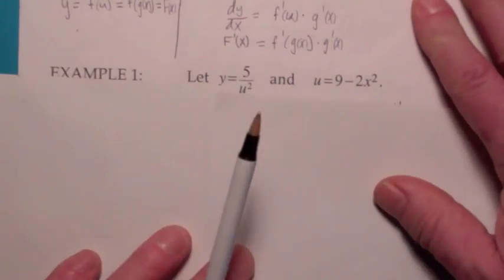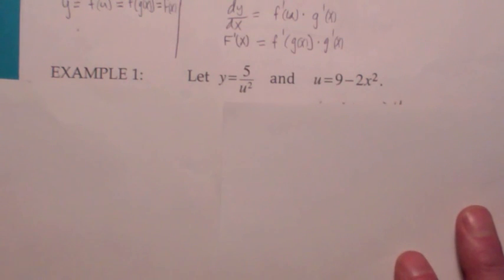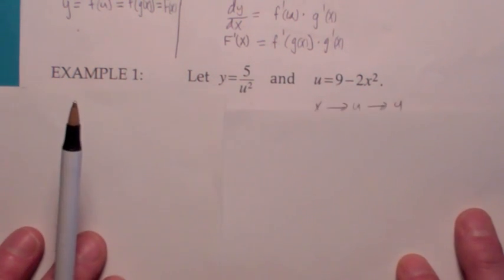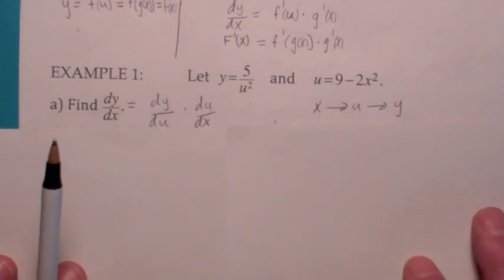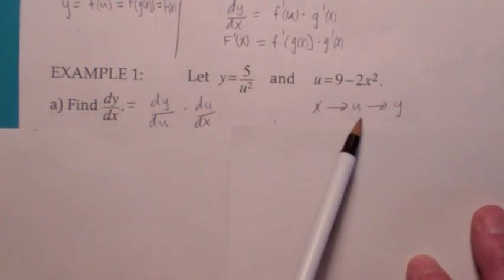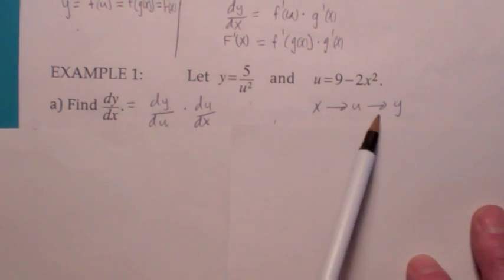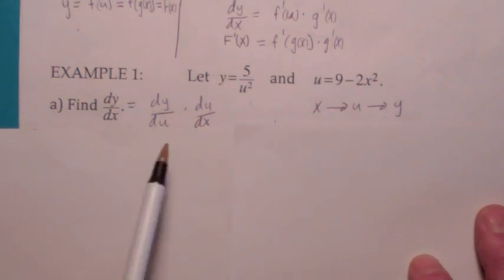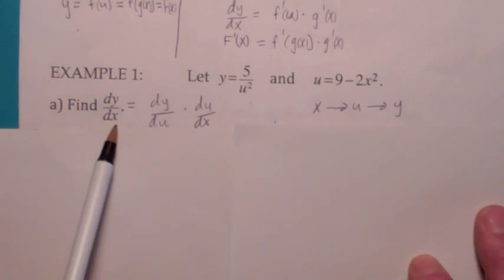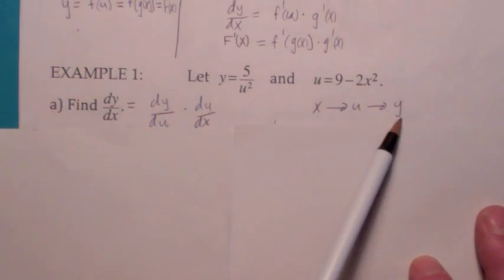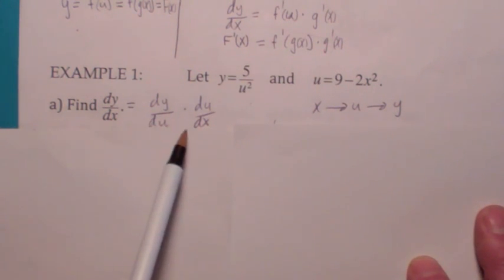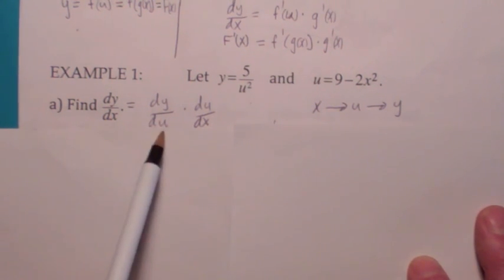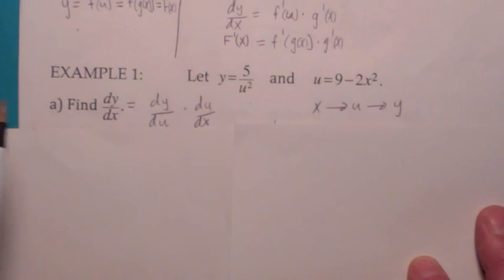Let's look at this example. You're given y equals 5 over u squared, u equals 9 minus 2x squared, and you want to find dy/dx. If you think of it this way, u is a function of x and y is a function of u. If you want to find dy/dx by the chain rule, it's equal to dy/du times du/dx. So to find dy/dx, all you have to do is find each of these two.